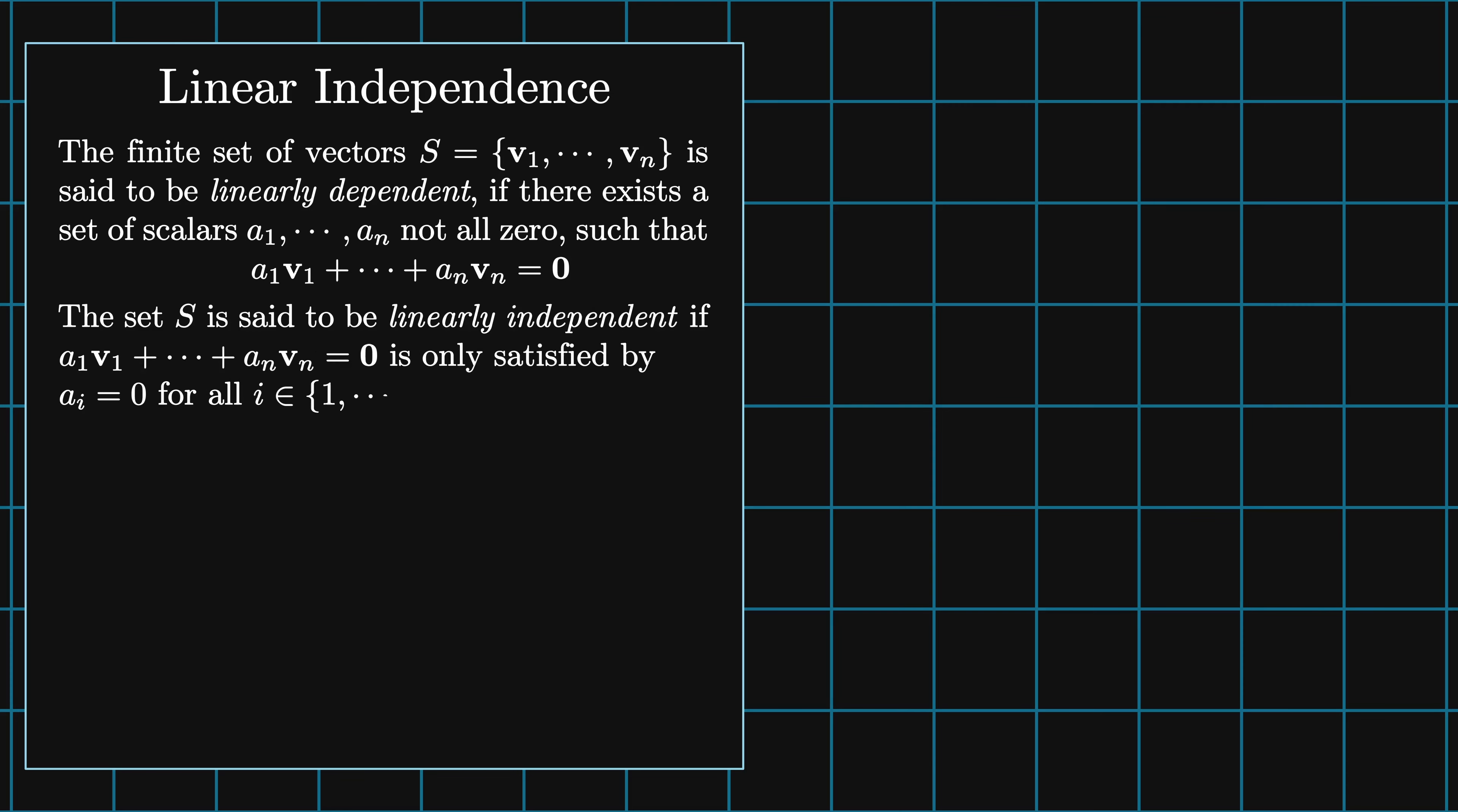Likewise, the set S is said to be linearly independent if the sum on i of aᵢ times vᵢ is equal to the zero vector is only satisfied when all of the aᵢ are equal to zero.